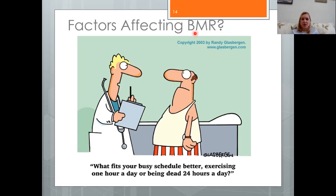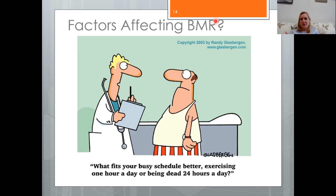Muscle mass is a huge factor for basal metabolic rate — actually more important than gender itself, because muscle requires more energy to maintain. The reason gender correlates with BMR is that men statistically have more muscle mass than the average female, making muscle mass the key driver.